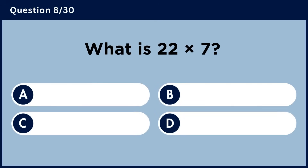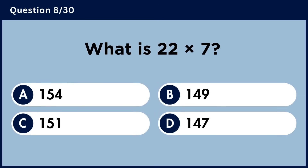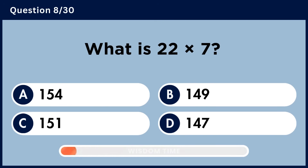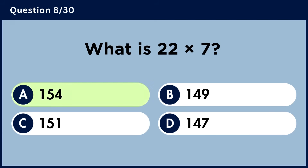What is 22 multiplied by 7? Answer A: 154.